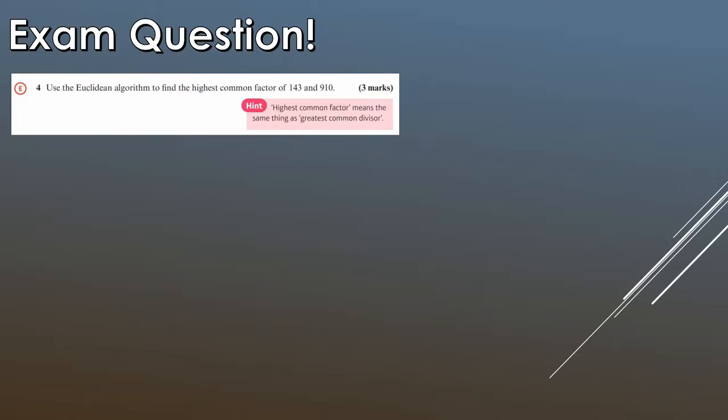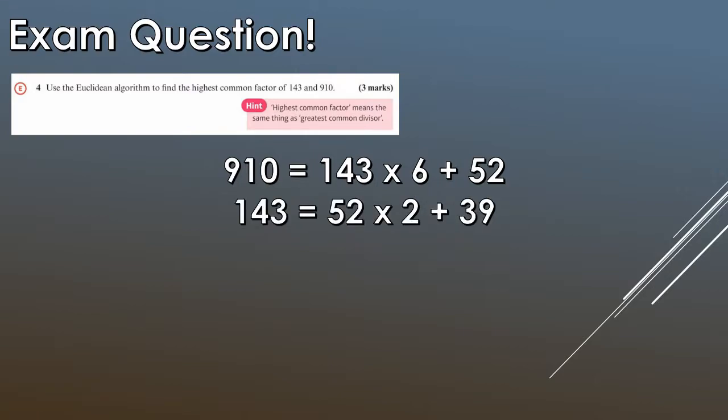So again we write 910 equals, so we put the big number on the left like that. We do 143 times 6 and then we have to add on the remainder. So this is as close as we can get to 910 without being above it. We add on the 52. Keep shifting everything to the left, so you just keep going with this procedure here. So 143 is equal to 52 times 2, then we have to add on the 39 as well, so that gives us this line here.